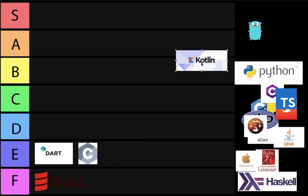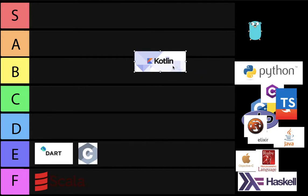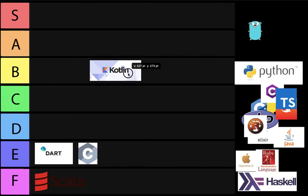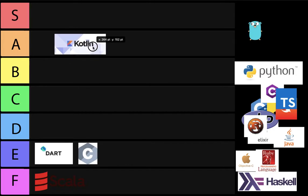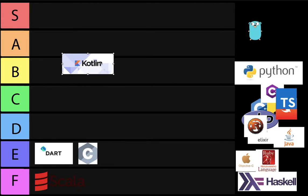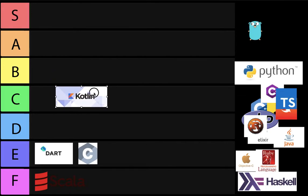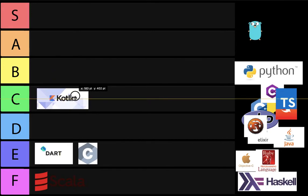Next we got Kotlin. It's one of those languages — it runs on JVM. Google is promoting it as their main Android language, so in the future it can be a big thing if Android goes on forever. For now I'm gonna put it in C tier, because it's getting relevant — it is relevant now and can become more relevant in the future.